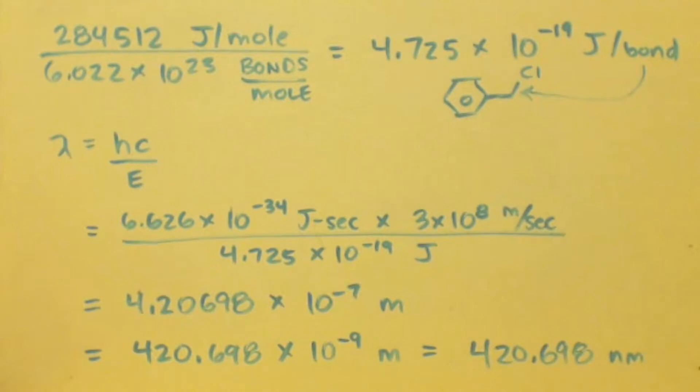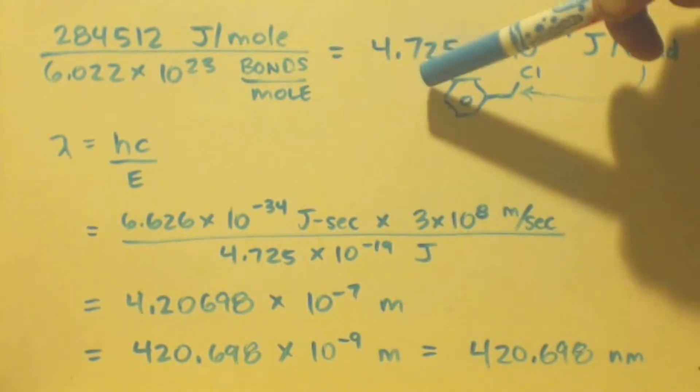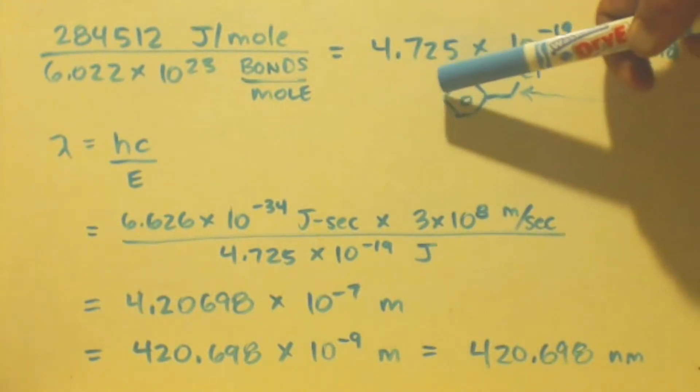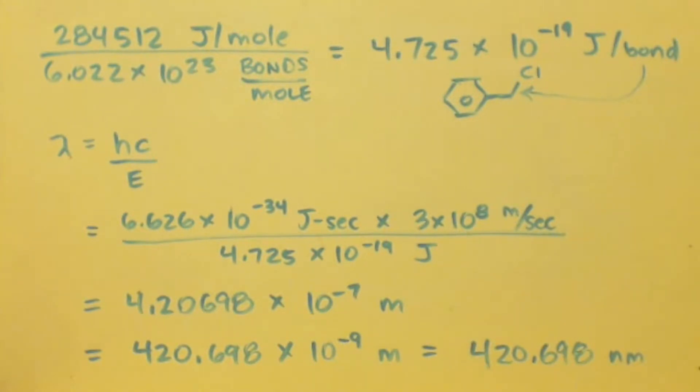Now, what was 400 nanometers? How much energy was it? It was 4.96 times 10 to the negative 19. Obviously 4.96 is bigger than 4.725 - they're almost the same number, but it is higher. So 400 nanometers or UV light will work, it's gonna break the chlorine bonds. It can barely break this one and won't break any other bonds, but it can break this bond, so that's a no-no.